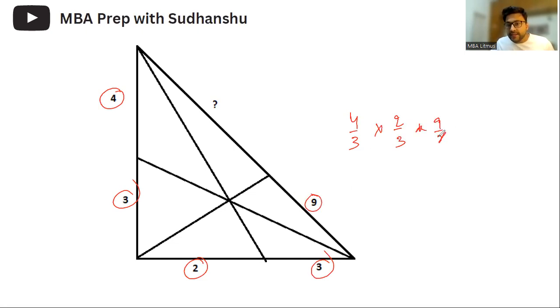Nine upon X must be equal to one. Now, if I want to find out this number, which is X, four upon three into two upon three into nine upon X. If I cross-multiply, I get X is equal to eight. So, if you see this becomes nine is to eight. So, four upon three into two upon three into nine upon eight.